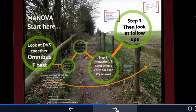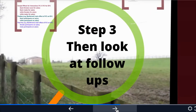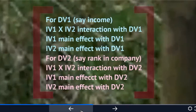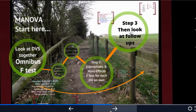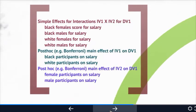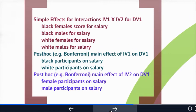You're not done yet — you have to follow the journey in order. Step three is looking at the follow-ups. If your ANOVAs in step two were not significant, you stop and do not look at any follow-up analyses. But if any were significant, you continue to step three. For example, if you had a significant interaction on one of your DVs, you would look at the simple effects of that interaction on that DV.